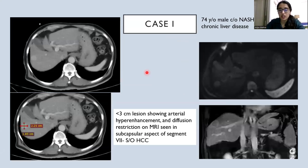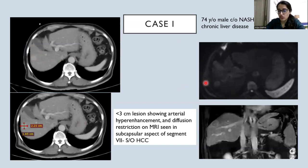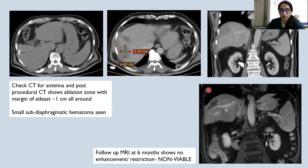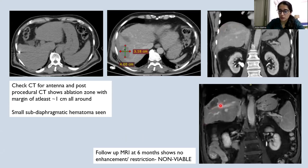Case 1 is a 74-year-old male with non-alcoholic steatohepatitis-related disease showing a less than 3 cm lesion with arterial hyper-enhancement on CT with washout and diffusion restriction on MRI. The post-procedural CT showed an ablation zone with a margin of at least 1 cm or more around the lesion with no major complications except a small sub-diaphragmatic hematoma. Follow-up MRI at 6 months showed no enhancement or restriction within the treatment zone, confirming a non-viable tumor.